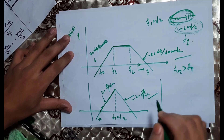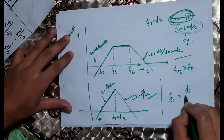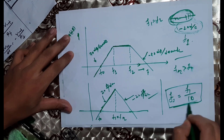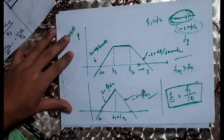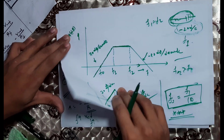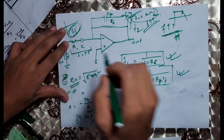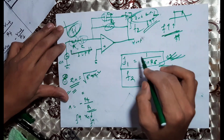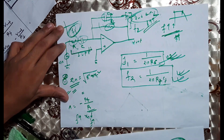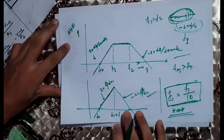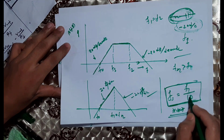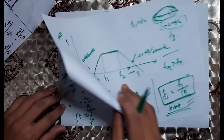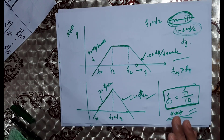For the circuit to work as a proper differentiator, the input signal frequency fs must be less than f1 divided by 10. F1 equals 1 divided by 2πR1C, and F2 equals 1 divided by 2πRf times Cf. If we satisfy these conditions, we can achieve proper differentiation. We will solve a practical problem based on this in the next video. Thank you.